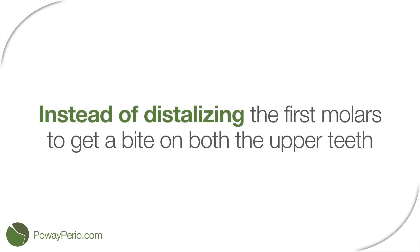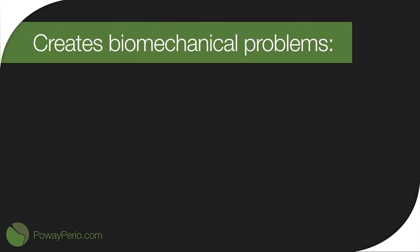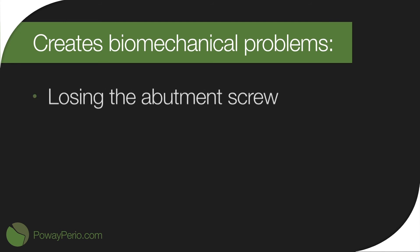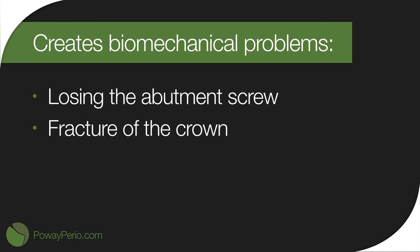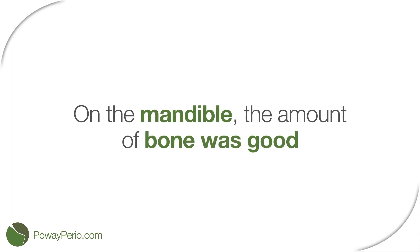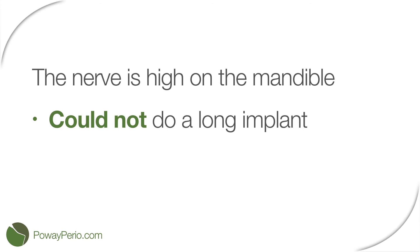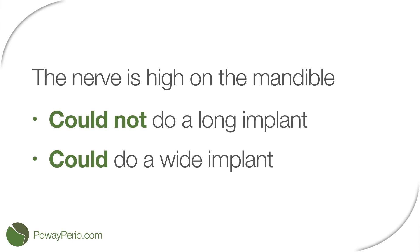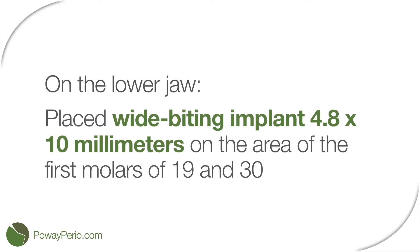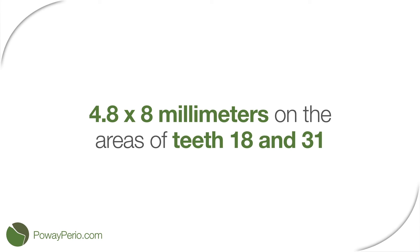The area of number 18 and number 31 was added to establish better occlusion on the lower right and lower left side, instead of distalizing the first molars to get a bite on both upper teeth. In terms of biomechanics this would be a major issue in the long run, as mesial leverage creates biomechanical problems and bone loss — such as losing the abutment screw, fracture of the crown, fracture of the abutment, or even bone loss around the implant crest. On the mandible, the amount of bone was good. The only concern was a relatively high nerve on the mandible, so we could not place very long implants but could use wide implants. On the lower jaw, we placed wide body implants 4.8 by 10 mm on the area of the first molars number 19 and 30, and 4.8 by 8 mm on the area of teeth number 18 and 31.